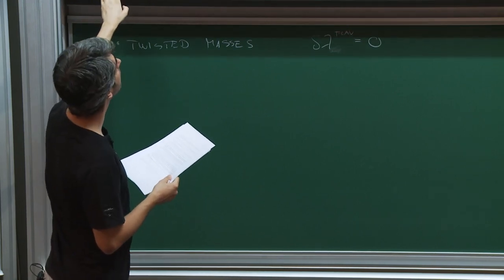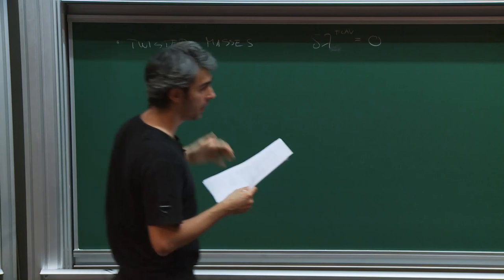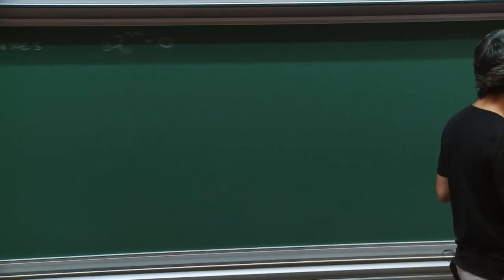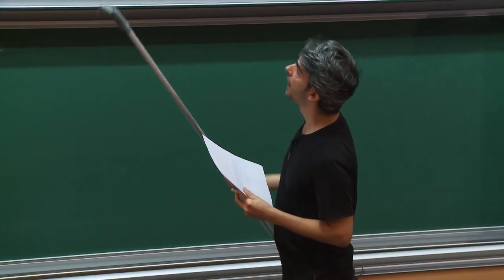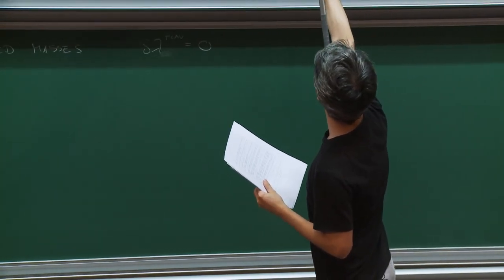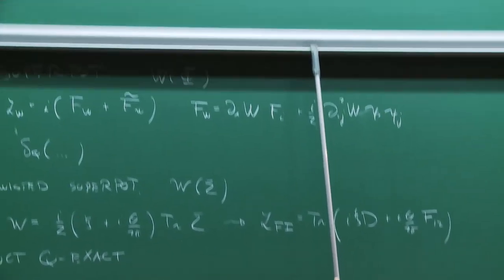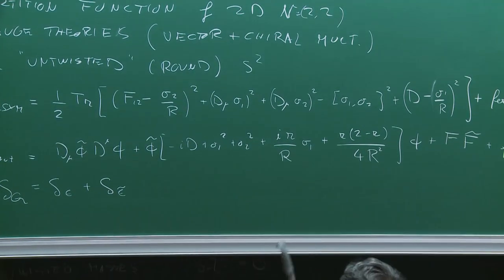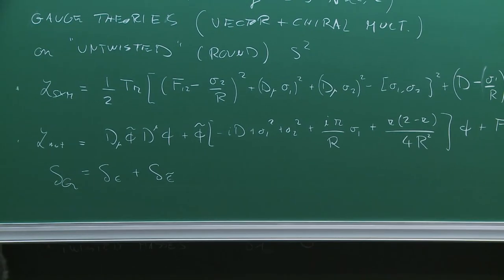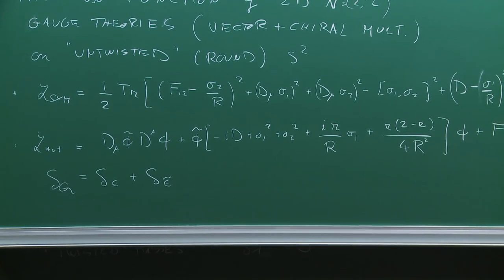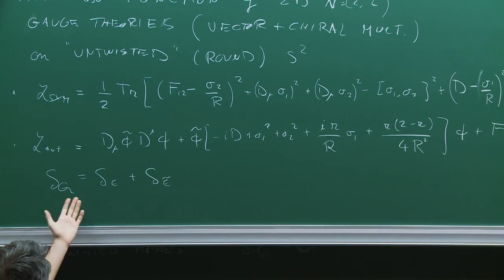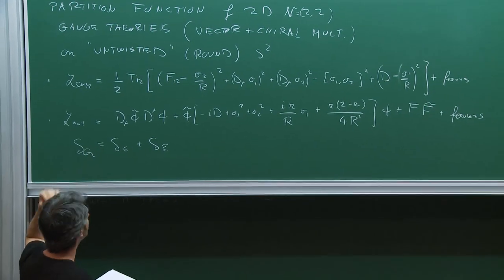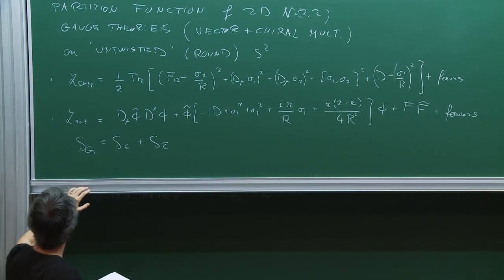Now we want to proceed with our localization computation. Those two terms are Q-exact, so we can try to use these very same terms to perform the localization. We should check if they have the nice properties — they are both Q-exact and also Q-closed, since this is the supersymmetric action of the theory. This one here, along the contour we chose — the obvious contour taking real fields or fields which are complex conjugates — is manifestly positive: it is a sum of positive terms.